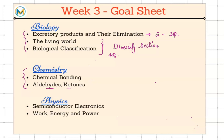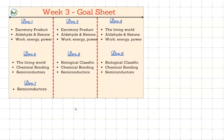In chemistry we have chemical bonding and aldehyde ketones. Carboxylic acid will be in the next week, so only aldehyde and ketone. Chemical bonding we can expect around four questions from this, aldehyde ketone around one to two questions. Semiconductors and electronics is another important topic, let's say four questions from this particular chapter. Work, energy, and power, we can expect around two questions.